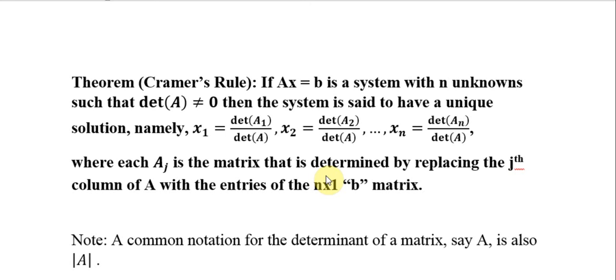Cramer's Rule. If AX equals B is a system with n unknowns such that the determinant of A is not equal to 0,